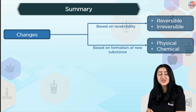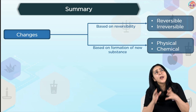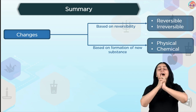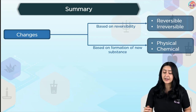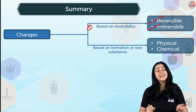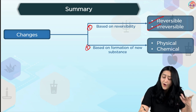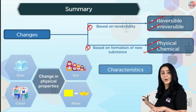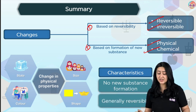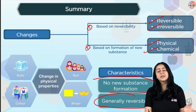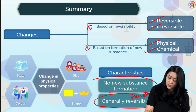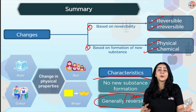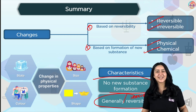Quick recap: a change is something that alters one or more properties of a substance. Changes can be classified on reversibility — reversible or irreversible — and on the basis of formation of a new substance — physical change or chemical change. Physical changes involve no new formation of substance, could be reversible or irreversible, and physical properties include change of shape, change of size, change of state, and change of color.